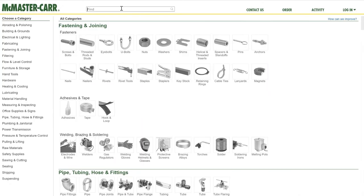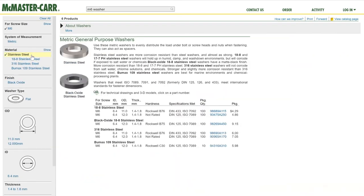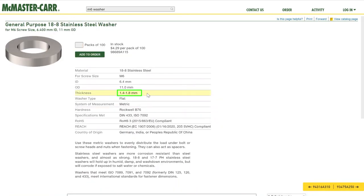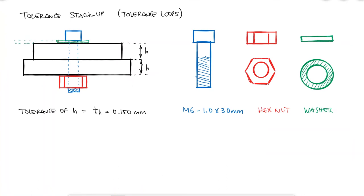If I look for the tolerances of the other components through, let's say, McMaster, I can find, for example, that the washer for an M6 hole will be in the range of 1.4 to 1.8 millimeters. In the same way, I can find, for example, that a hex nut is 5 millimeters plus or minus 0.1 millimeters thick.